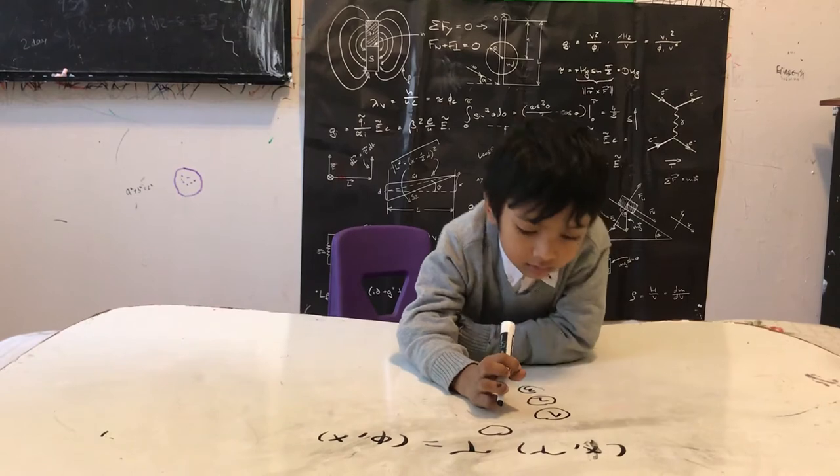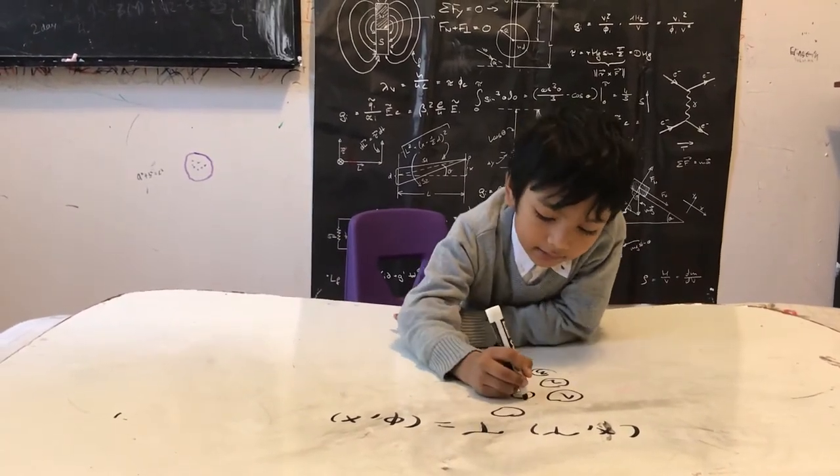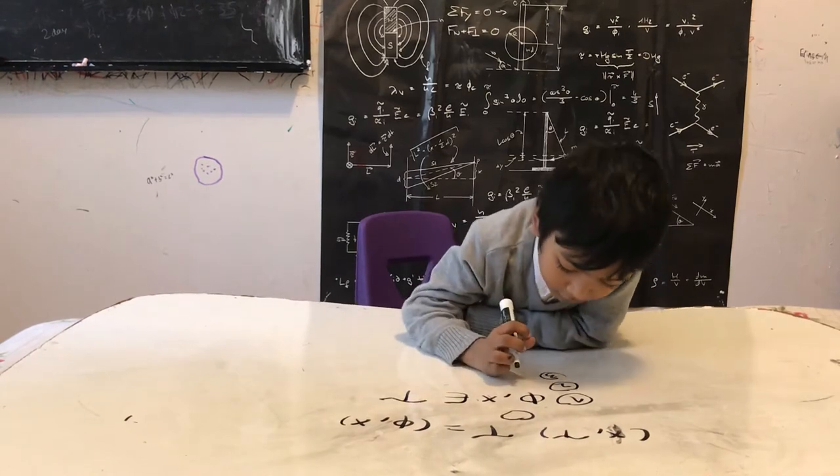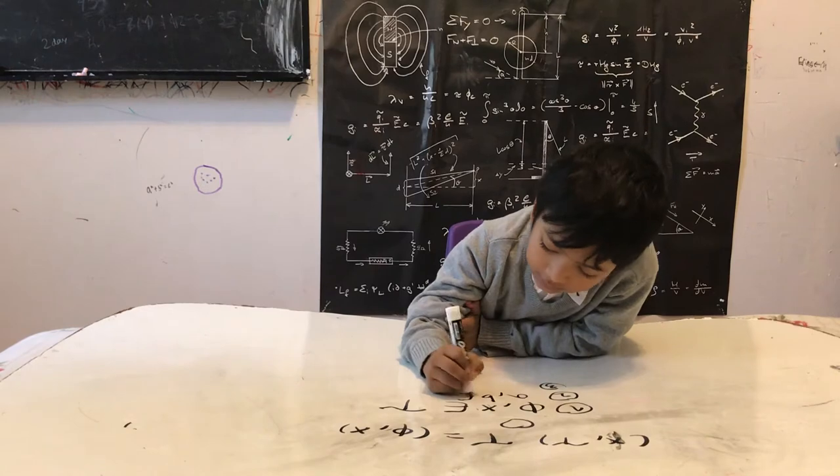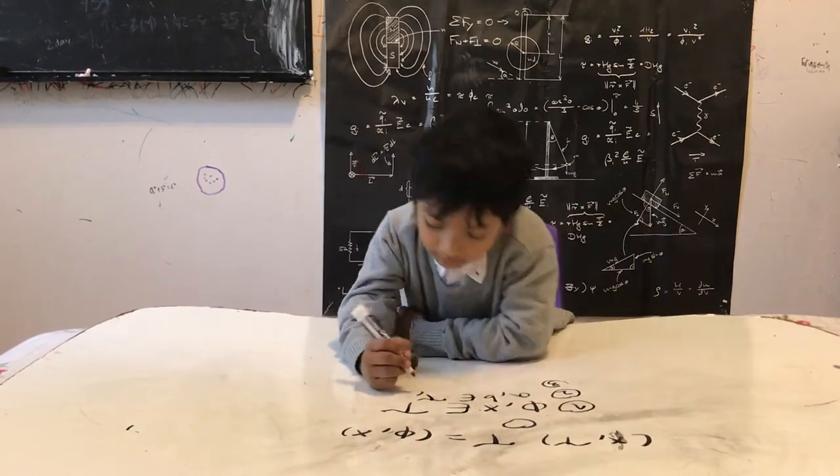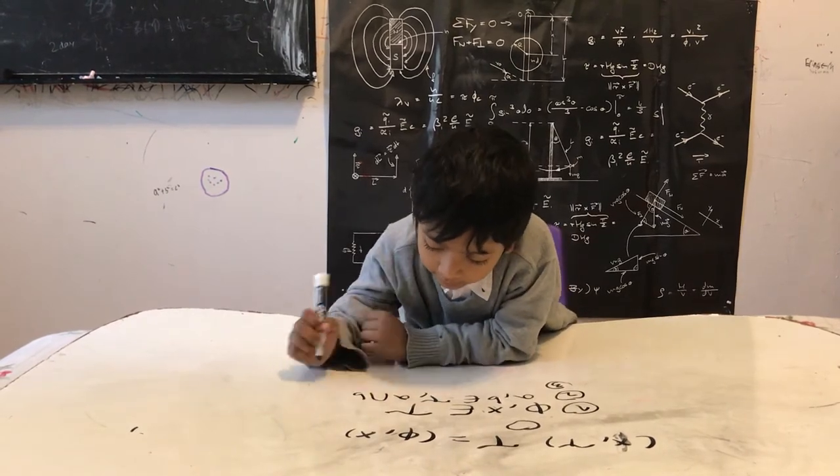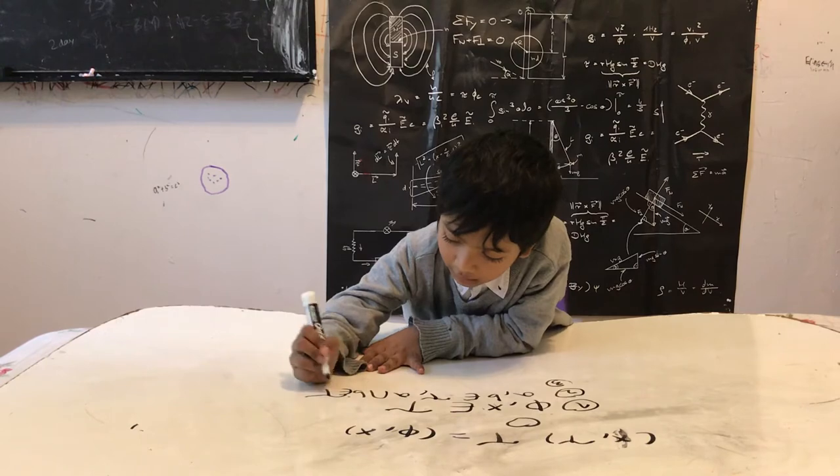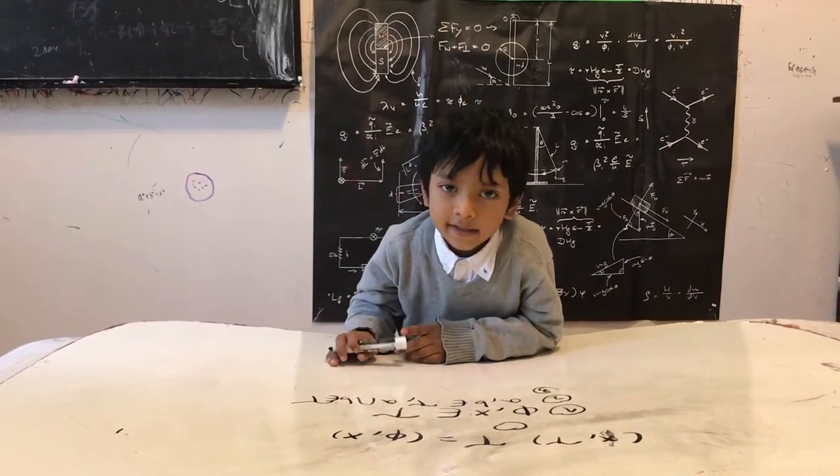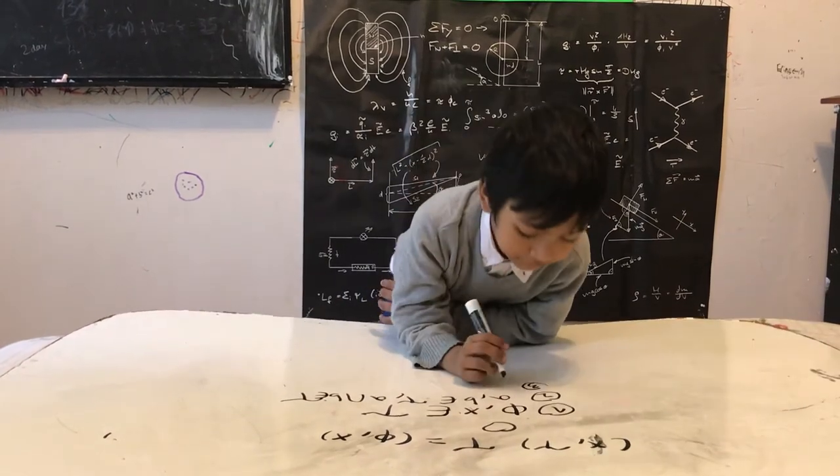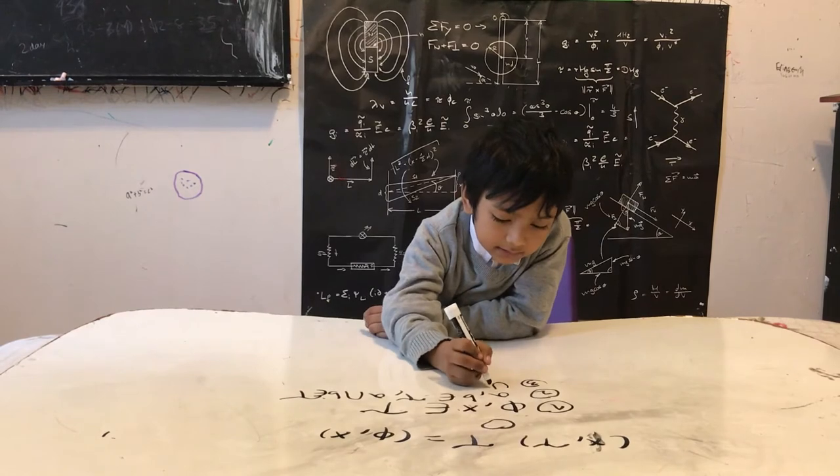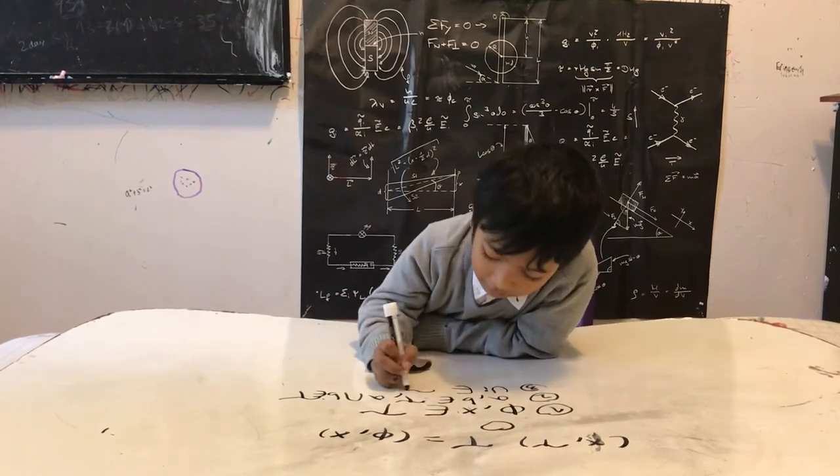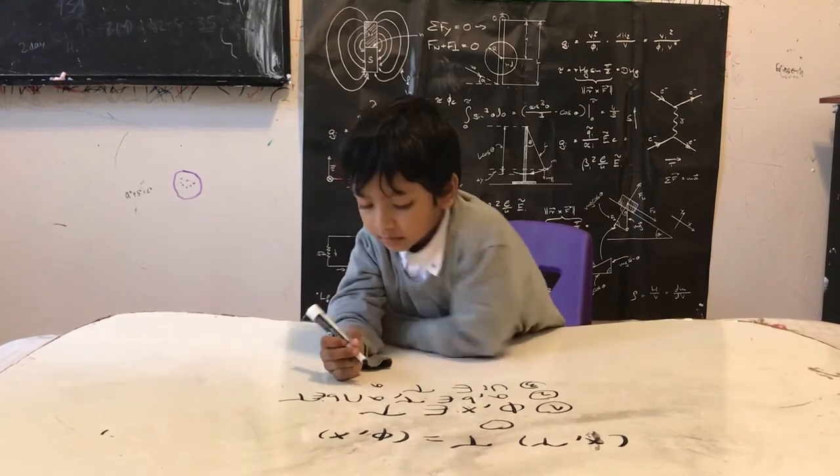So number one was that the empty set and the X must be in tau, right? So if A and B are in tau, then the intersection between A and B must be in tau. And also, I forgot that funny E. So and number three is, if all the elements are in tau, then the union between A and B must be in tau.